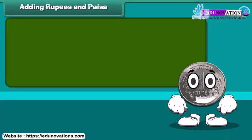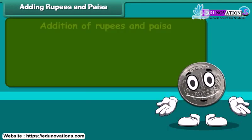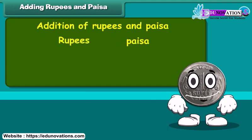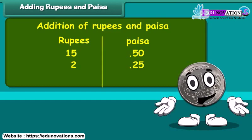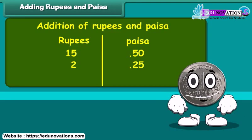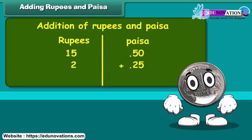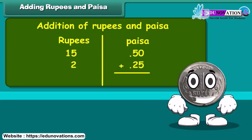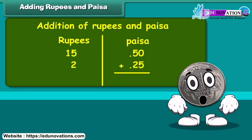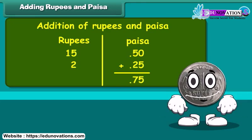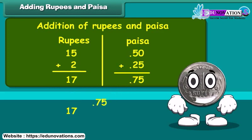Let us learn addition of rupees and paisa. Add 15 rupees 50 paisa and 2 rupees 25 paisa. Write the amount in two separate columns of rupees and paisa. First, add numbers in the paisa column: 50 plus 25 paisa is equal to 75 paisa. Now add numbers in the rupees column: 15 plus 2 is 17. Therefore, the sum is 17 rupees and 75 paisa.